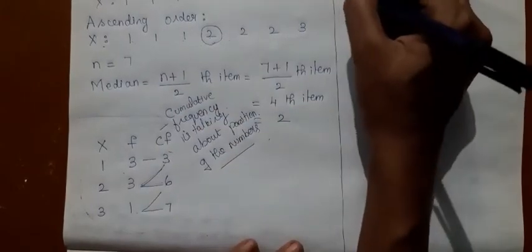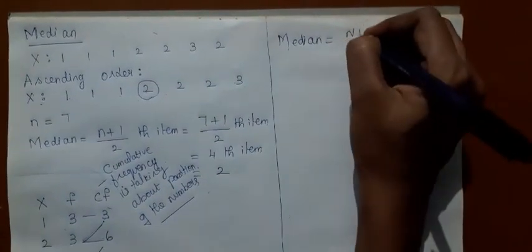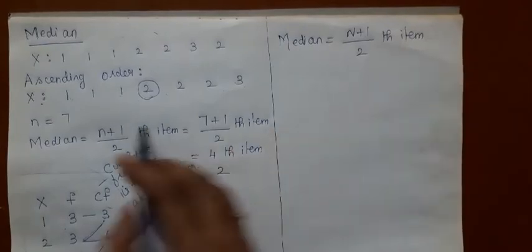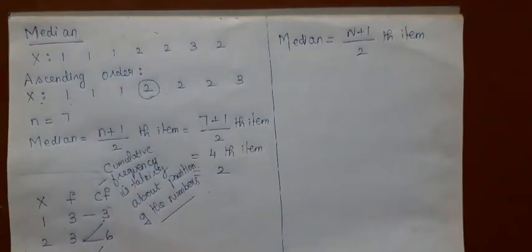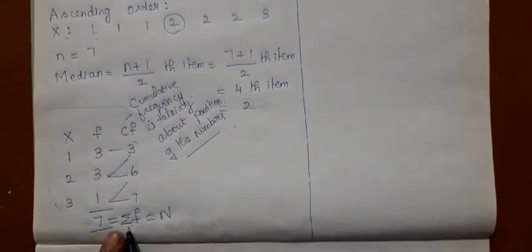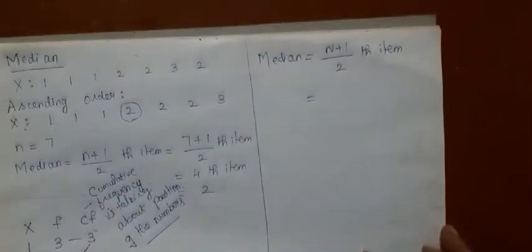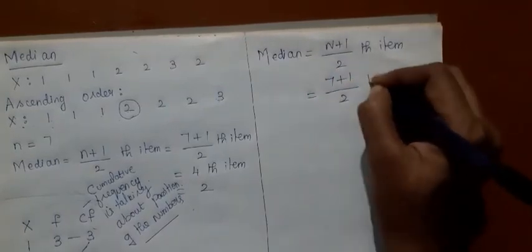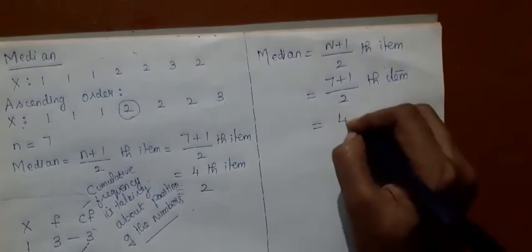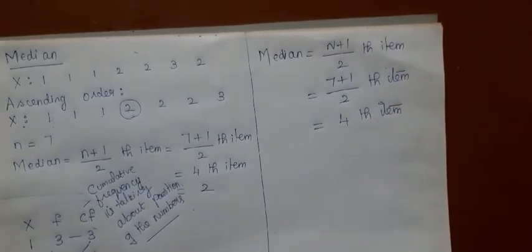With this discrete series, for individual series the methodology was as shown. For discrete series, median is equal to capital N plus 1 by 2 th item. Here N is 7 — you should not take N as 3, because 1 is repeated 3 times, 2 is repeated 3 times, and 3 is repeated once. So 3 plus 3 plus 1 is 7; this is summation F, which is your capital N. So (N + 1) / 2 = 7 plus 1 by 2 = 4th item.